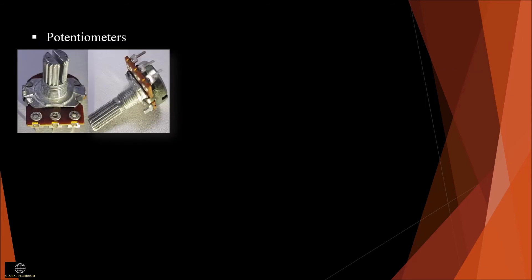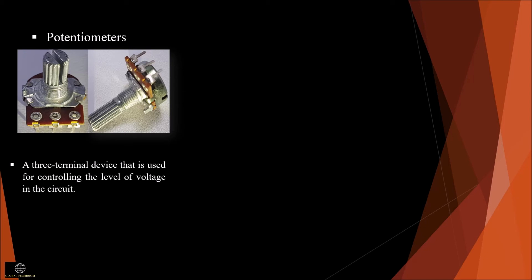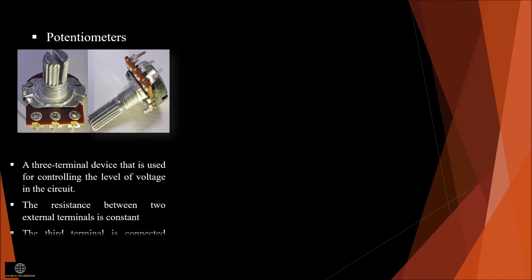A potentiometer is a three-terminal device used for controlling the level of voltage in a circuit. The resistance between the two external terminals is constant, while the third terminal is connected with the moving variable contact. The value of resistance can be changed by rotating the moving variable, which is connected to the control shaft.